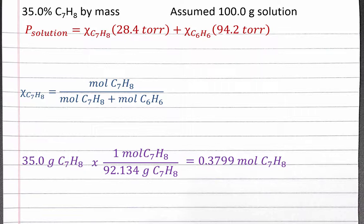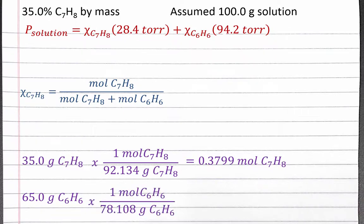Next, we'll find the moles of benzene. If 100 grams of solution has 35 grams of toluene, it must have 100 minus 35, or 65 grams of benzene, since the solution only has toluene and benzene. We can convert from grams of benzene to moles of benzene using the molar mass, and we should get 0.8322 moles of benzene in 100 grams of solution.